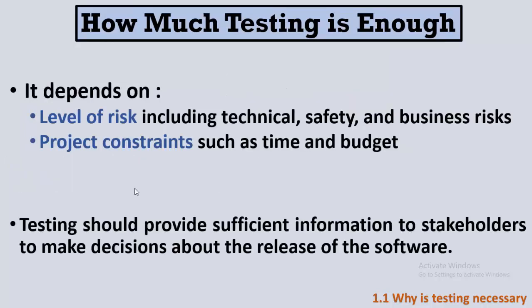When we perform testing, how do we determine that enough testing has been done? The answer depends on two things. First, the level of risk — including technical risk, safety risk (is it safe to release this software?), and business risks (are there competitors we need to beat to market?). Second, project constraints — how much time and budget are available? If time and budget are exhausted, we may have to release regardless. Testing also provides sufficient information to stakeholders so they can decide whether they are ready to release the software.